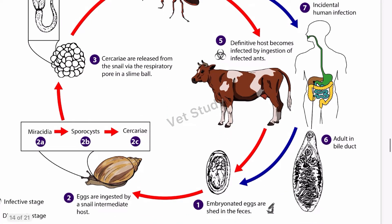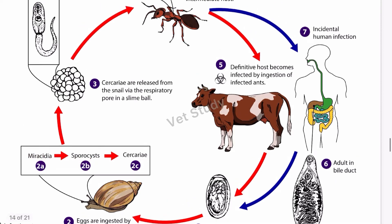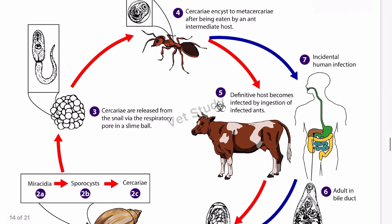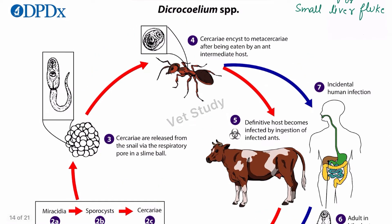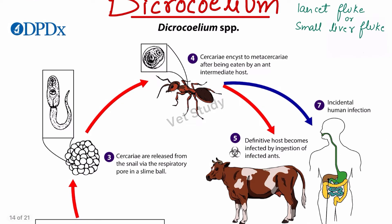In the life cycle, the eggs are embryonated and are shed in the feces — this is the diagnostic stage, meaning you can diagnose this parasite by finding eggs in the feces. These eggs are ingested by the snail, the first intermediate host, where the egg is converted to miracidium, sporocyst, and then cercaria. The cercaria are released from the snail through a respiratory pore in the form of a slime ball — the cercaria clump together to form this slime ball, which is eaten by the ant, the second intermediate host. Inside the ant, the cercaria converts to metacercaria.